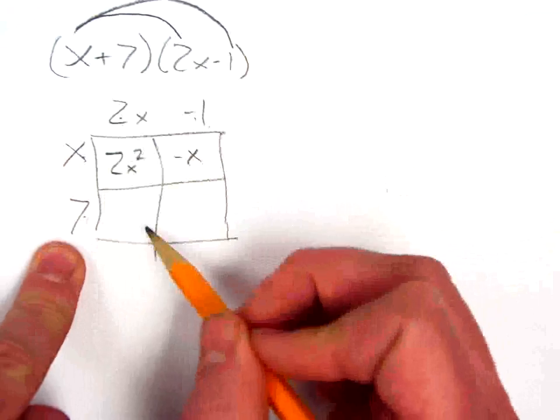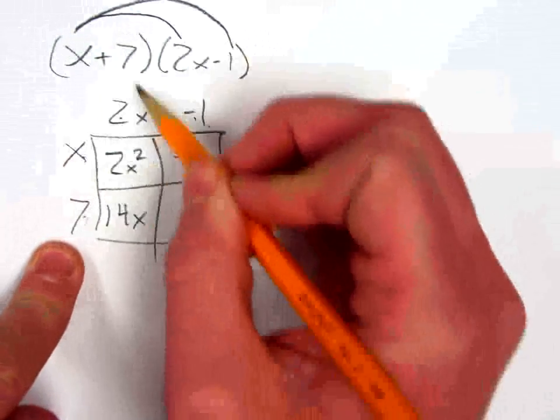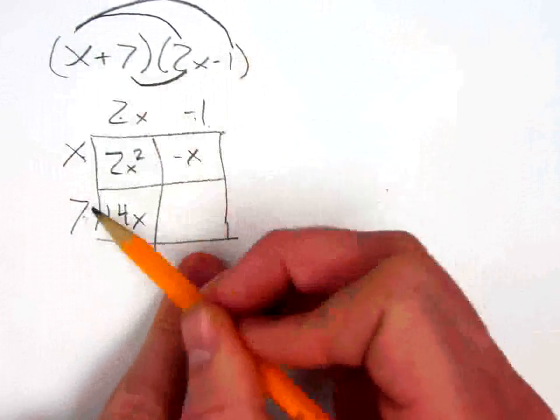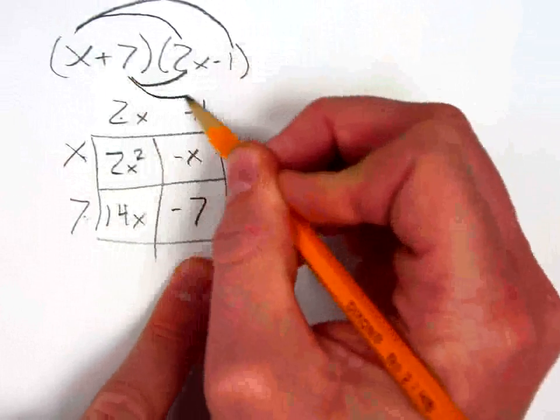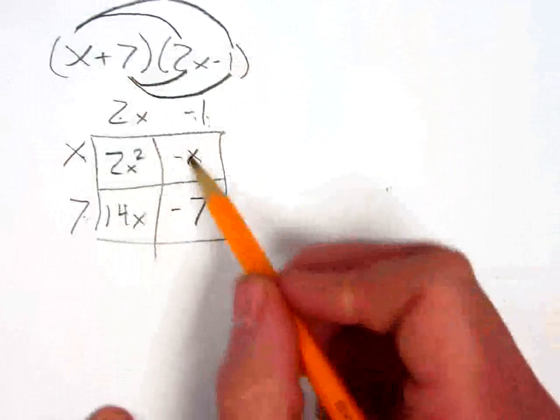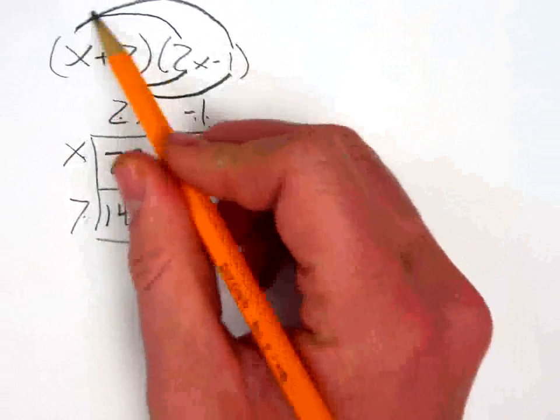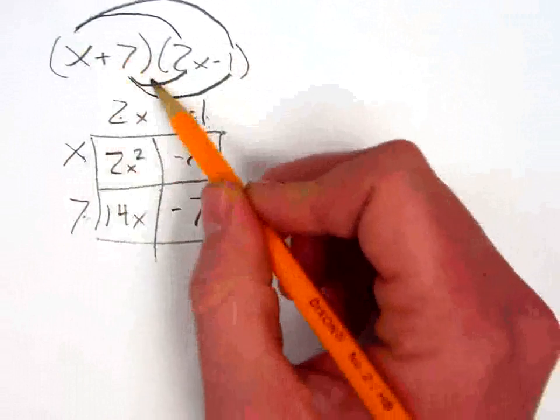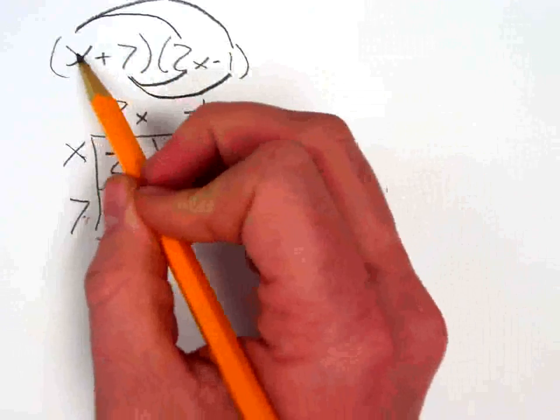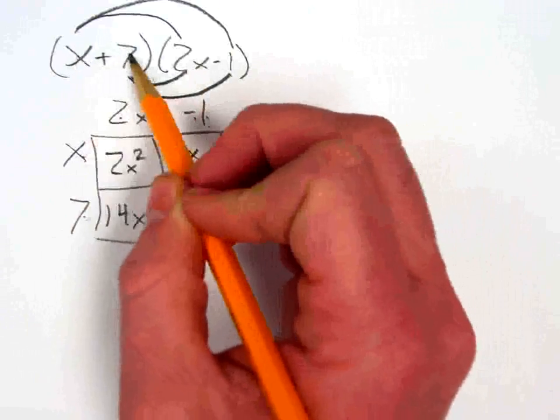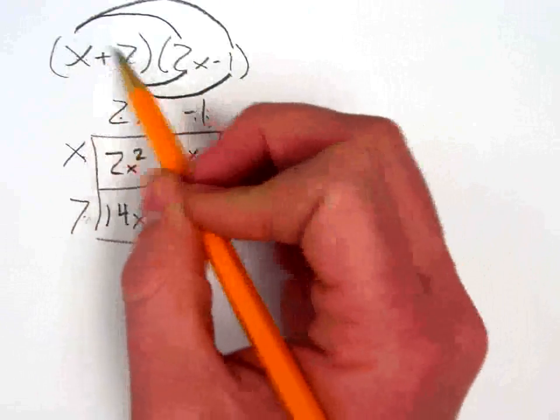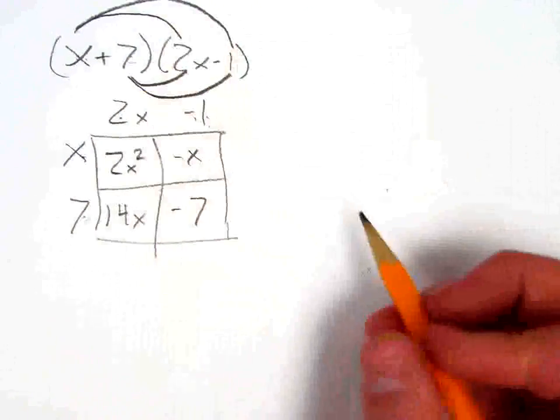Then I would go 7 times 2x, and then 7 times negative 1. Hopefully you can see the connection between using the box method and just taking that same idea and applying it to the distributive property. I'm taking each term in my first parenthesis and distributing it into the second parenthesis.